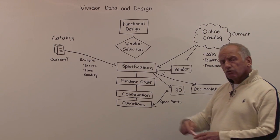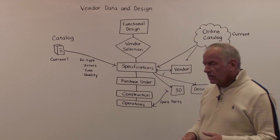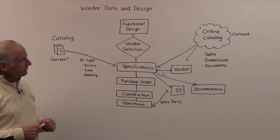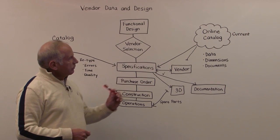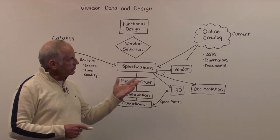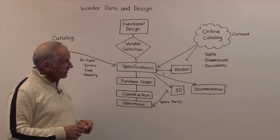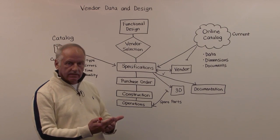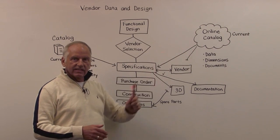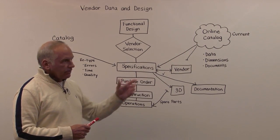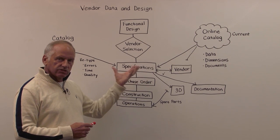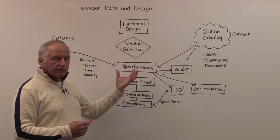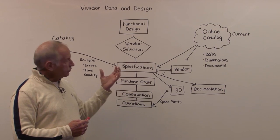Then you go for buying the stuff, construction, and operation — that is the workflow. What we can do to make things more productive is have online catalogs. Some vendors already have data in an online environment, which has great advantages. We can now use engineering tools to access these catalogs sitting in the cloud and pull the data in, immediately ready to fill out the specifications.